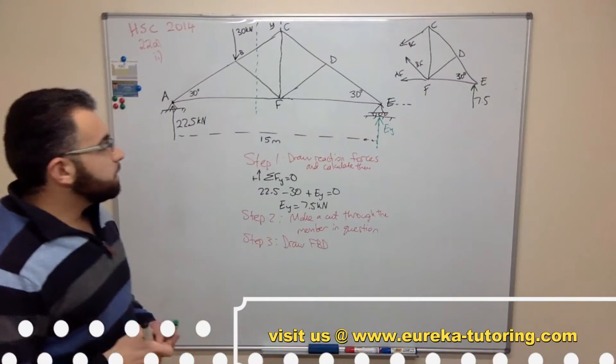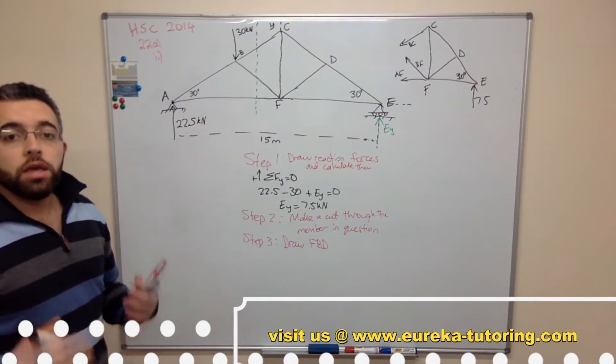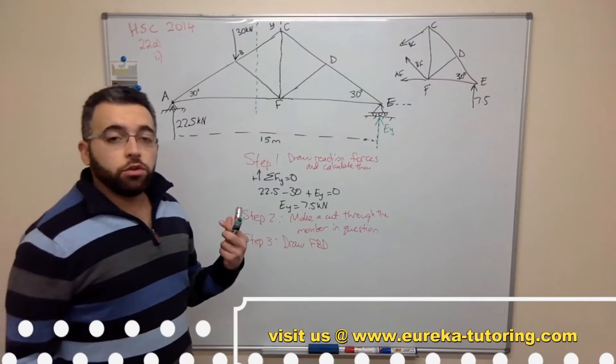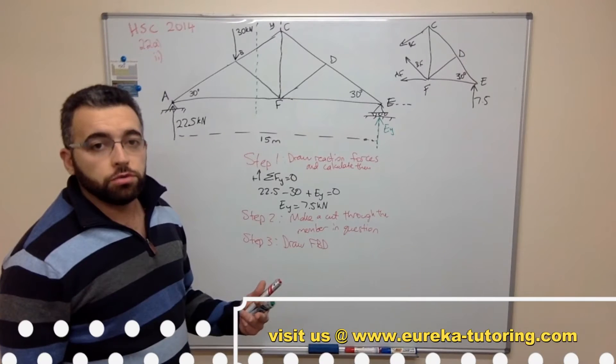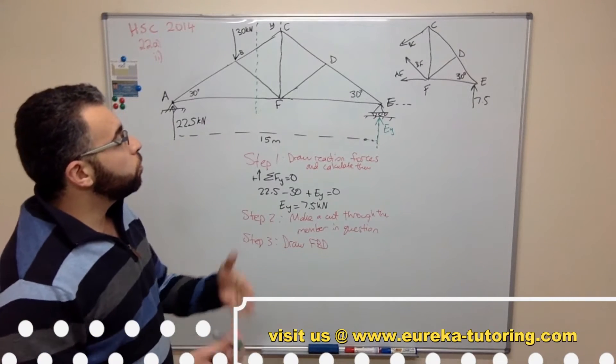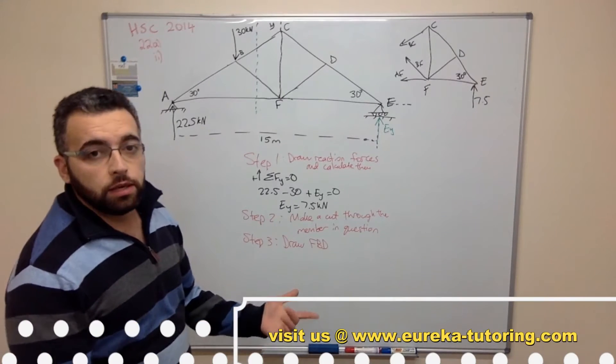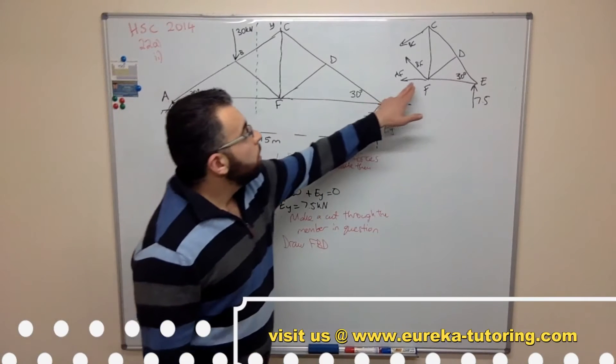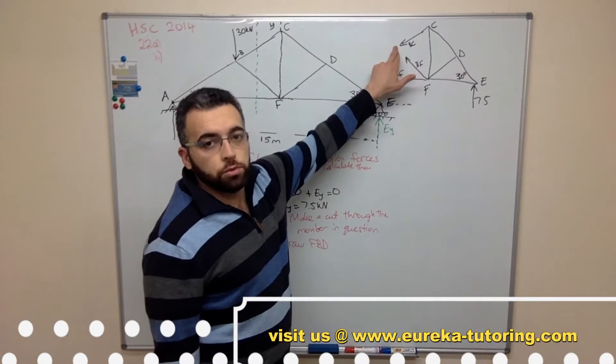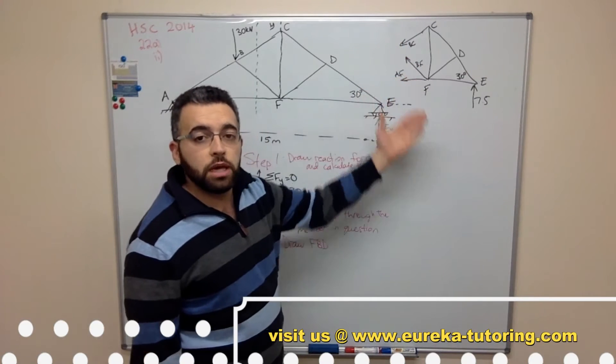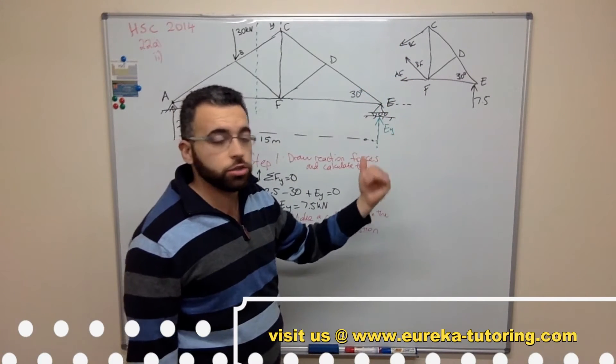Now the next step is we have to consider which equation to use. We can either use sum of moments, sum of forces in the y direction, or sum of forces in the horizontal direction. Now if we were to use sum of forces in the y direction, this has no vertical force, this has one and this has one as well. But these two are unknowns. Hence we can't use sum of forces in the vertical direction.